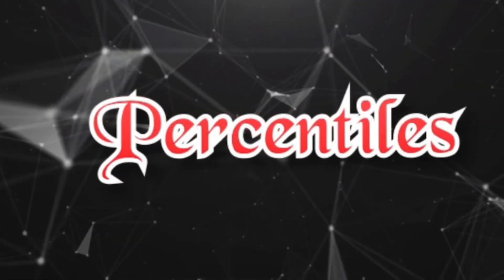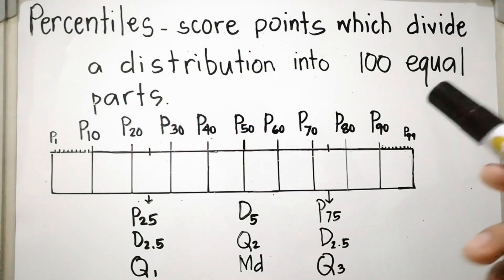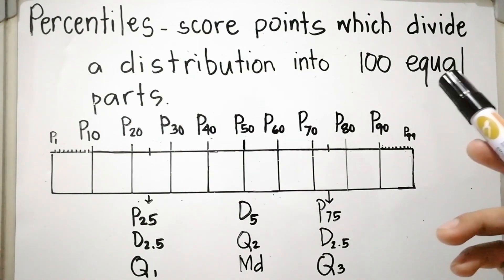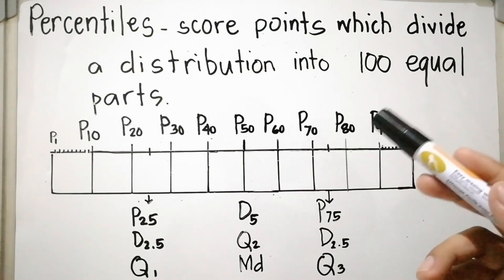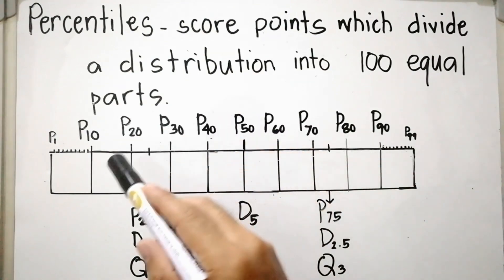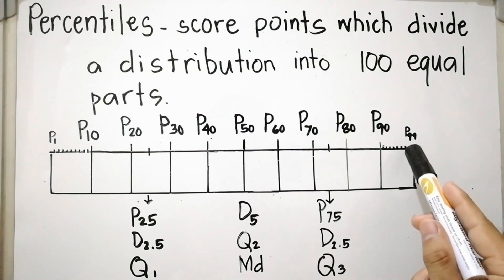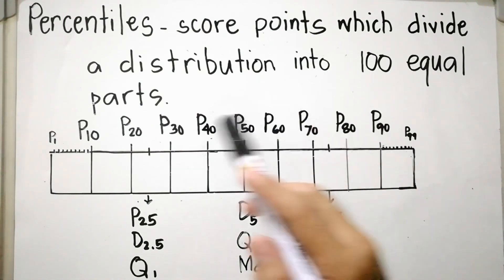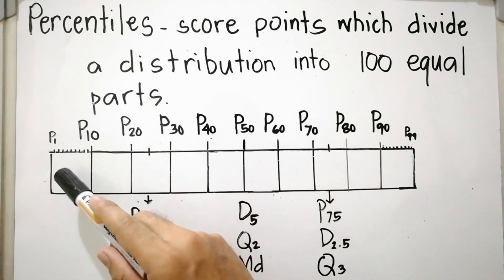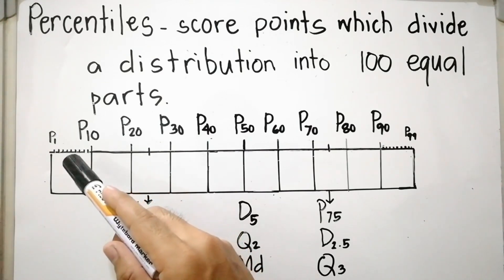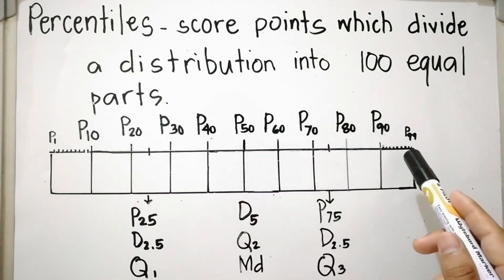Hi everyone, welcome back to my YouTube channel. Today we will talk about percentiles of ungrouped data, which is also under measures of position or quantiles. Percentiles are 99 score points which divide a distribution into 100 equal parts. These score points are the first percentile up to the 99th percentile, denoted as P sub 1, P sub 2, P sub 3, P sub 4, up to P sub 99.